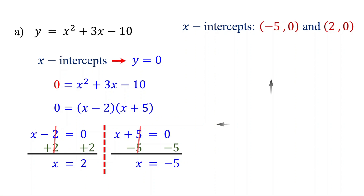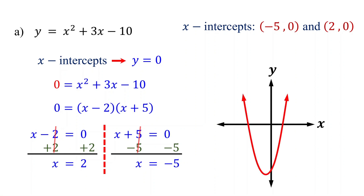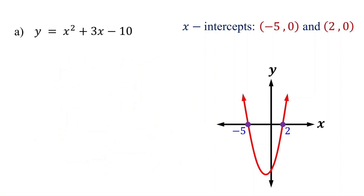If you plot the graph of this quadratic function, you will notice that the parabola intersects the x-axis at these points. Notice that since the parabola has two x-intercepts, it crosses the x-axis twice. Now let's find the y-intercept.